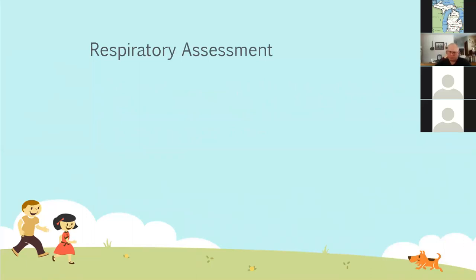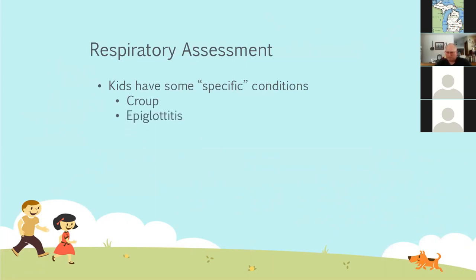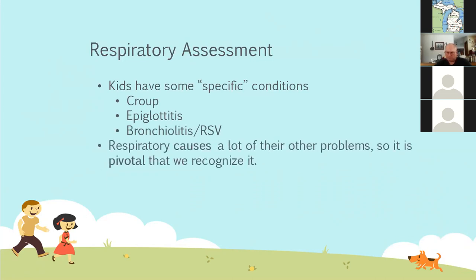We'll talk about some respiratory-specific conditions. There are some really specific conditions, and it's in quotation marks because there are more instances now of some of these occurring in older adults because of different environmental situations. But as a rule, you won't see these outside of certain age ranges. We're going to talk about croup, epiglottitis, and bronchiolitis or RSV. With kids, 90% of the time our problem is respiratory in cause — they don't have primary cardiac events. It is a respiratory condition until proven otherwise.